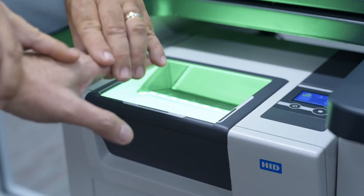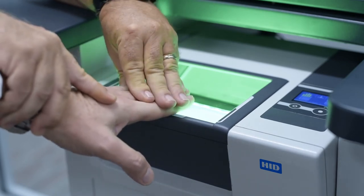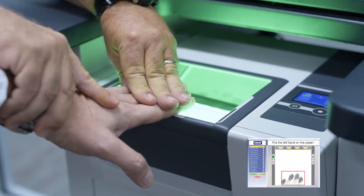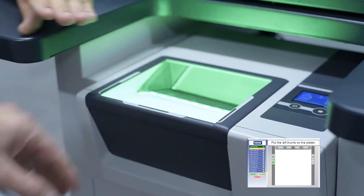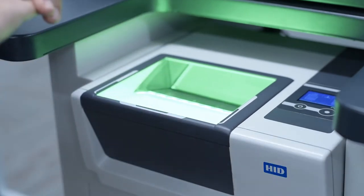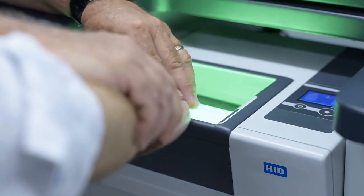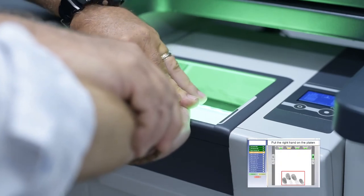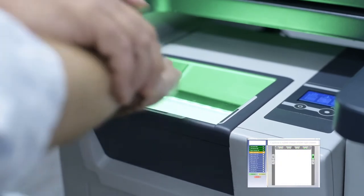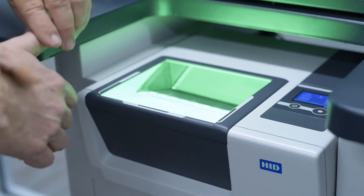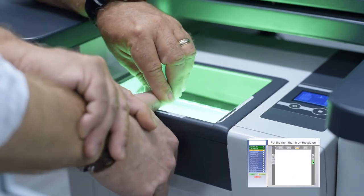When capturing 10 print flats, start by taking an overhand grasp of the subject's hand just behind or over the knuckles. It may be necessary to turn the subject's hand at a 15 degree angle before placing on the platen. Guide the fingers over and down on the platen and within the guide marks.